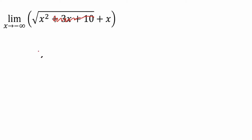This is important: the square root of x squared behaves like the absolute value of x. For example, if I plug in negative 3, negative 3 times negative 3 gives you 9, and the square root of 9 is 3 — and the absolute value of negative 3 is also 3. Likewise, if I plug in 3, 3 squared is 9, the square root of 9 is 3, and the absolute value of 3 is 3.